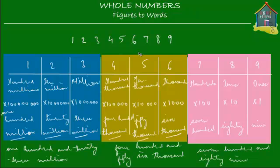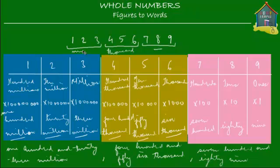So the number 1, 2, 3, 4, 5, 6, 7, 8, 9 is one hundred and twenty-three million, four hundred and fifty-six thousand, seven hundred and eighty-nine. All you did was split the number from right to left into groups of three digits. The first group has no suffix, the second group gets the suffix 'thousand,' and the third group gets the suffix 'million.' Inside each group, you read the number normally and add the suffix.